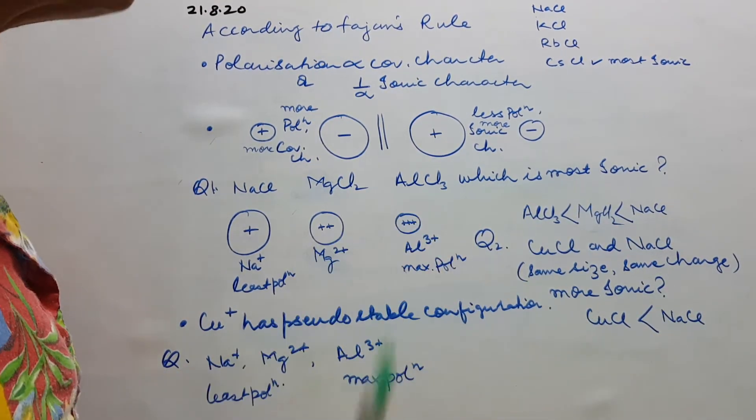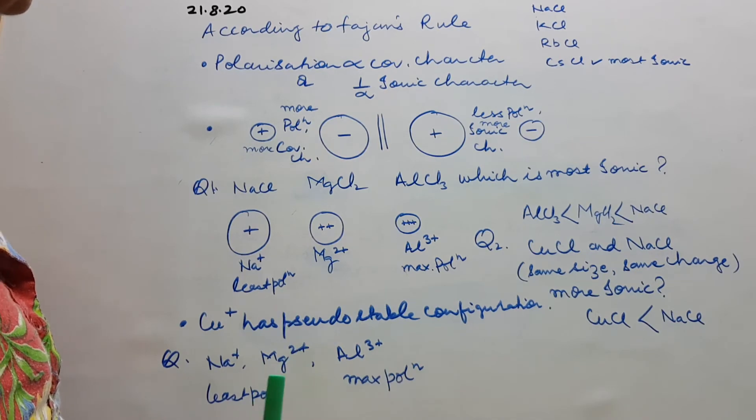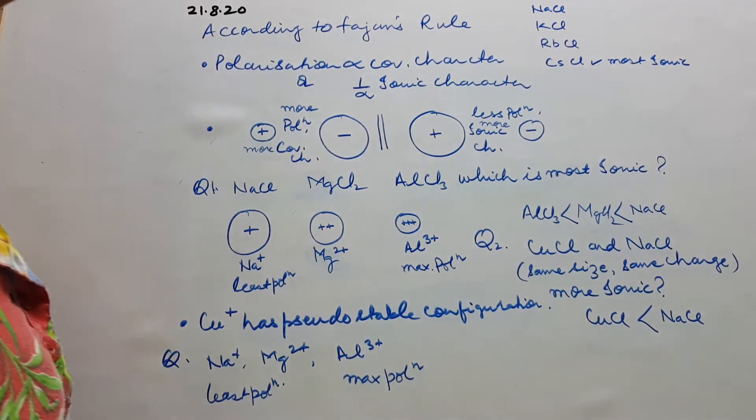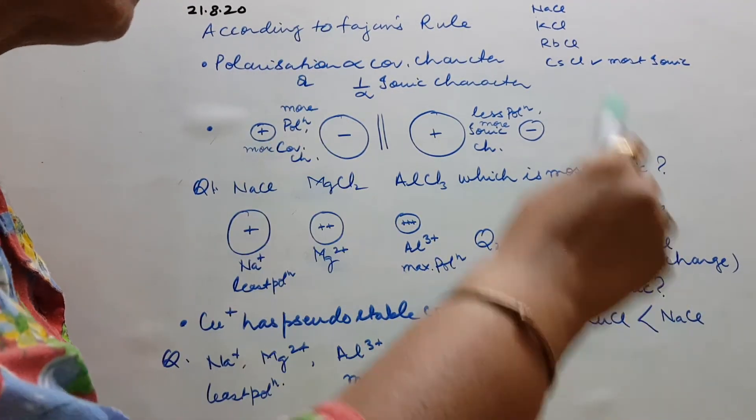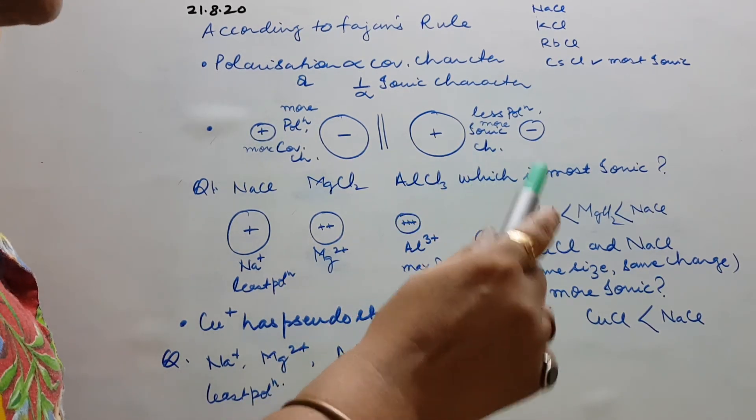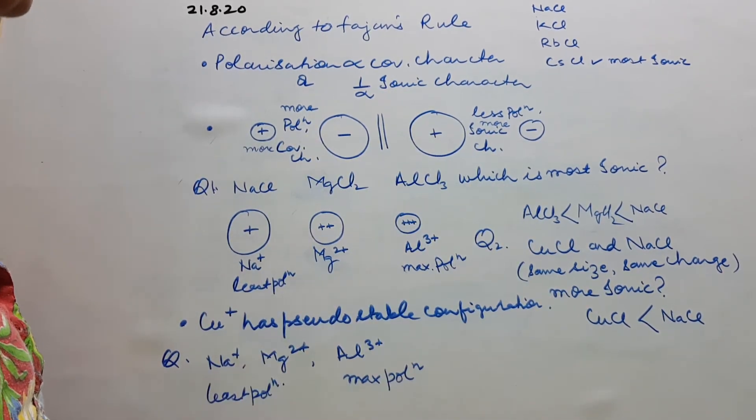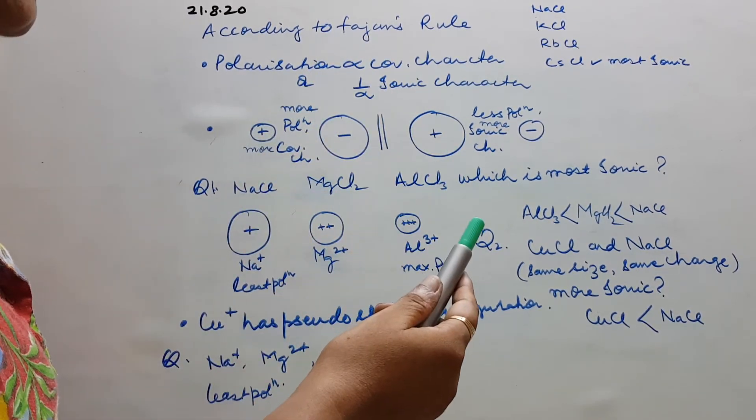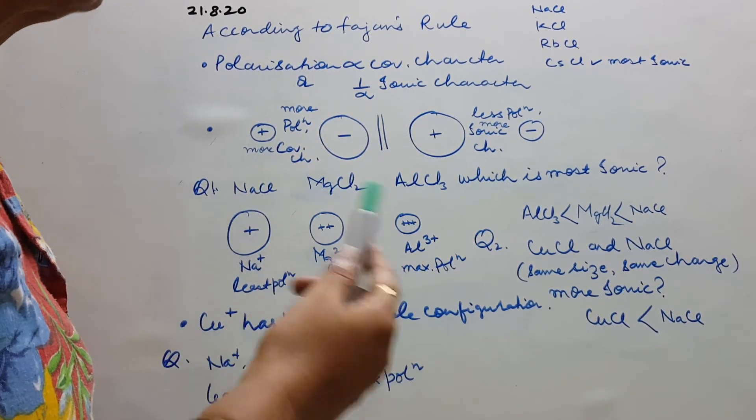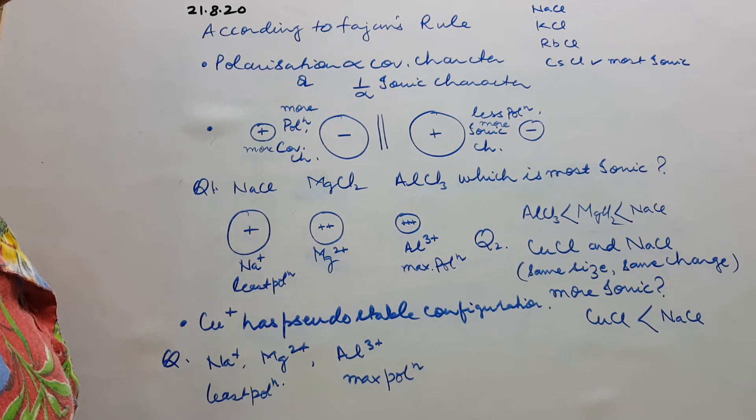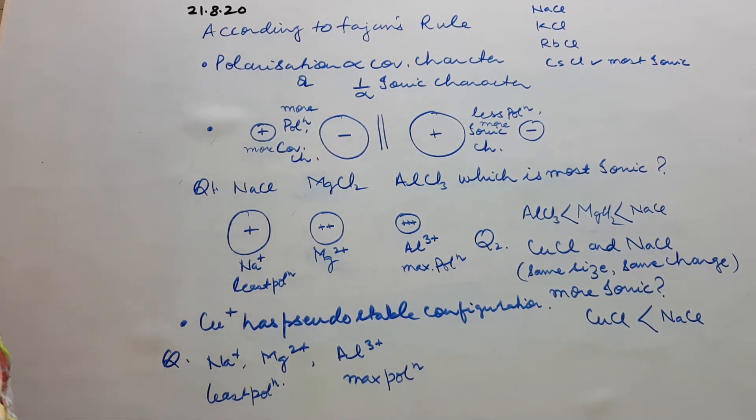Its third shell was completely filled, only 4s electron was taken out. So third shell is completely filled, hence stable configuration but not the octet. So whenever we have such cases, they also show more of polarization. Cu+ has pseudo-stable configuration.